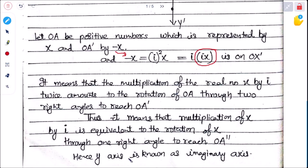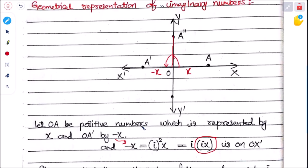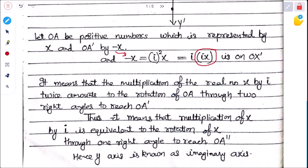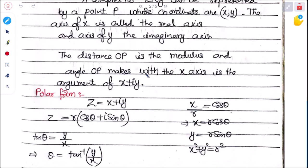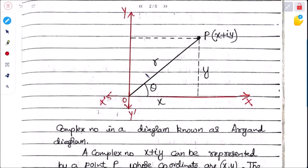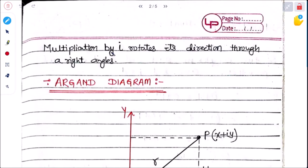Generally, the Y-axis is known as the imaginary axis and the X-axis represents the real axis. The multiplication by i rotates a number's direction through one right angle (90°).